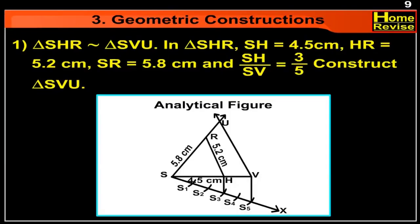Triangle SHR is similar to triangle SVU. In triangle SHR, SH is equal to 4.5 cm, HR is equal to 5.2 cm, SR is equal to 5.8 cm, and SH upon SV is equal to 3 upon 5. Construct triangle SVU.